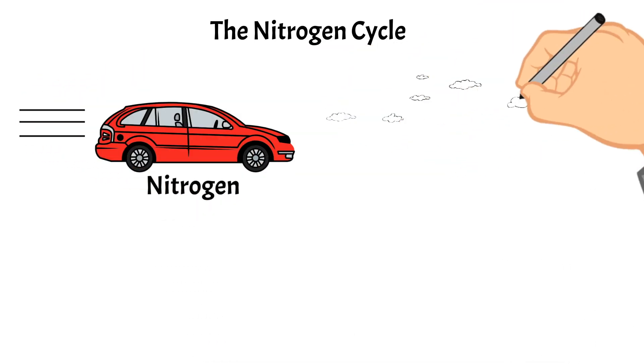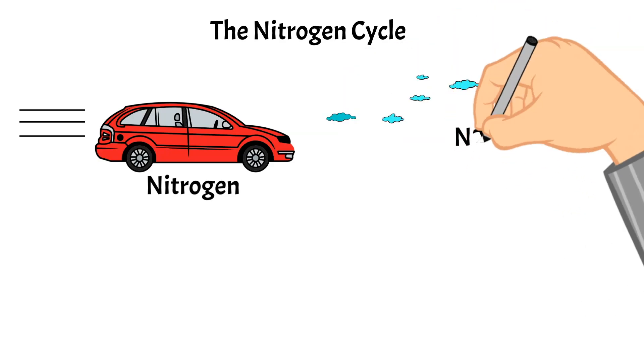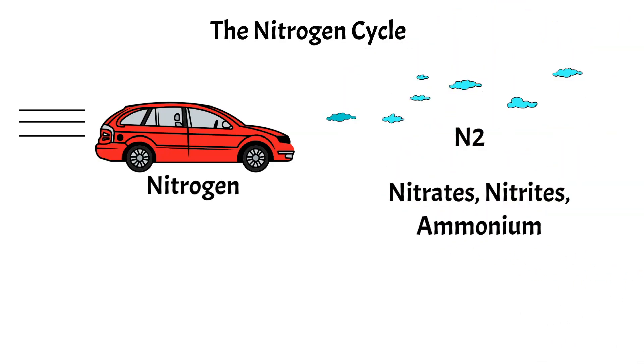There are different forms of nitrogen. There is nitrogen in the air or N2. There are nitrates, nitrites, and ammonium.